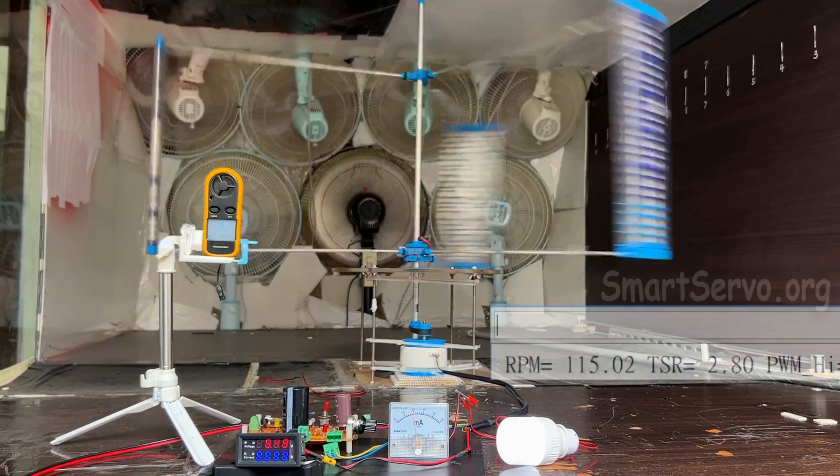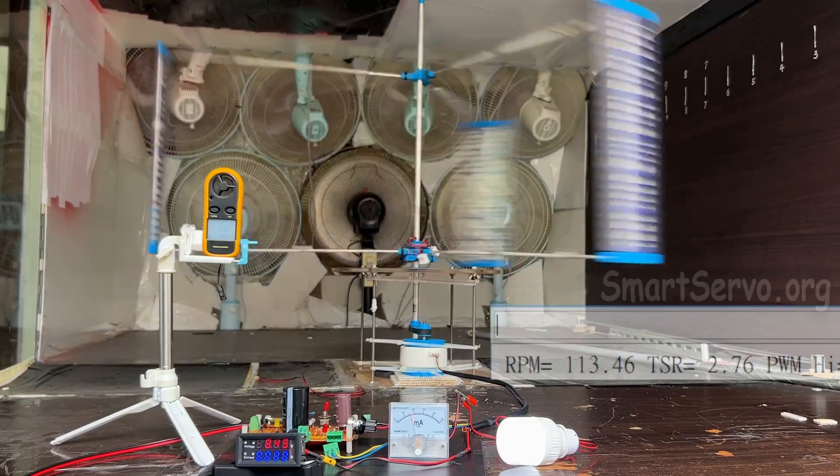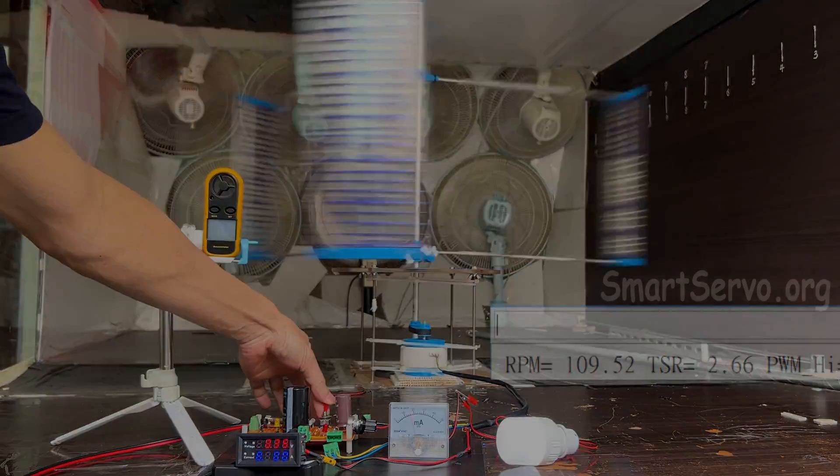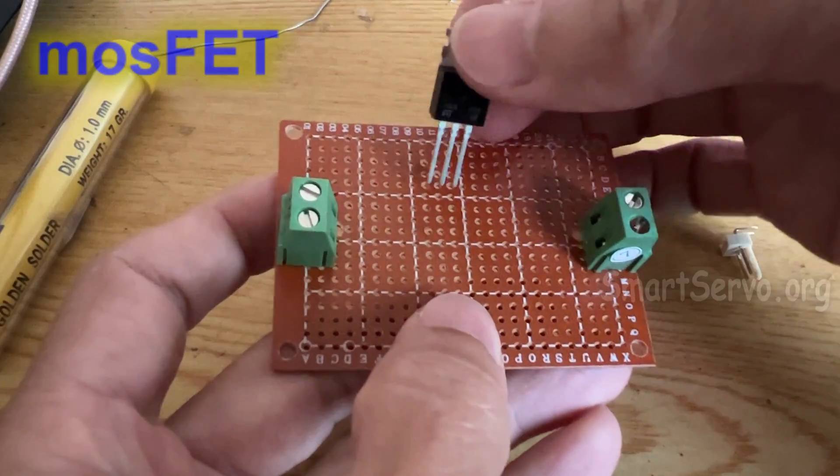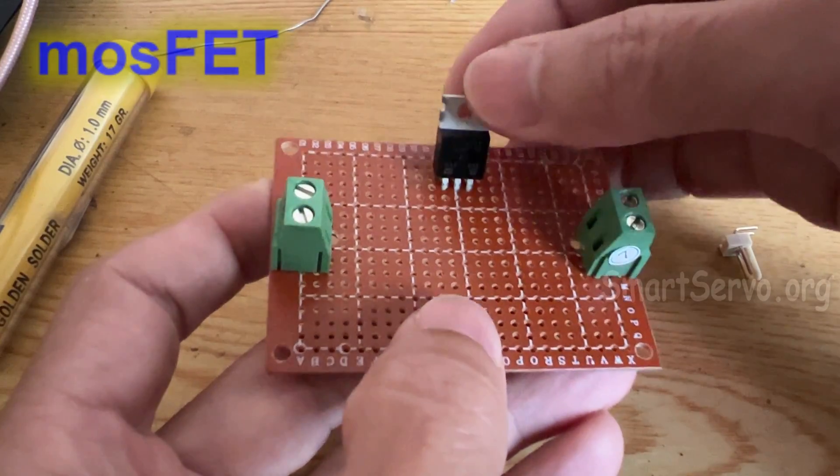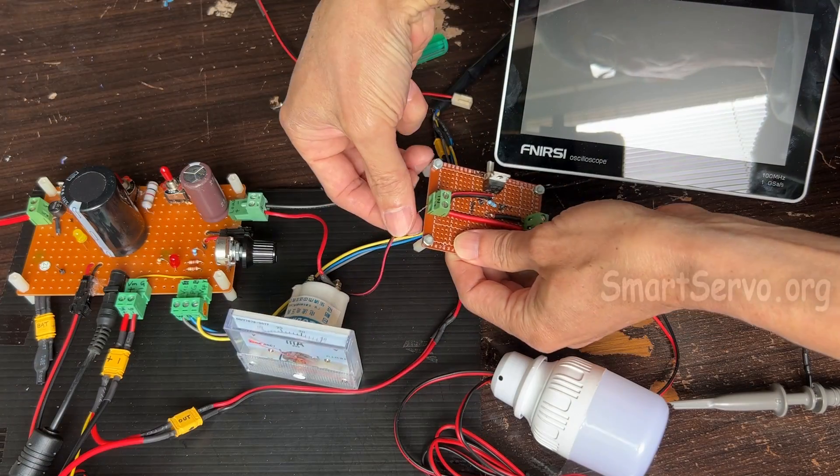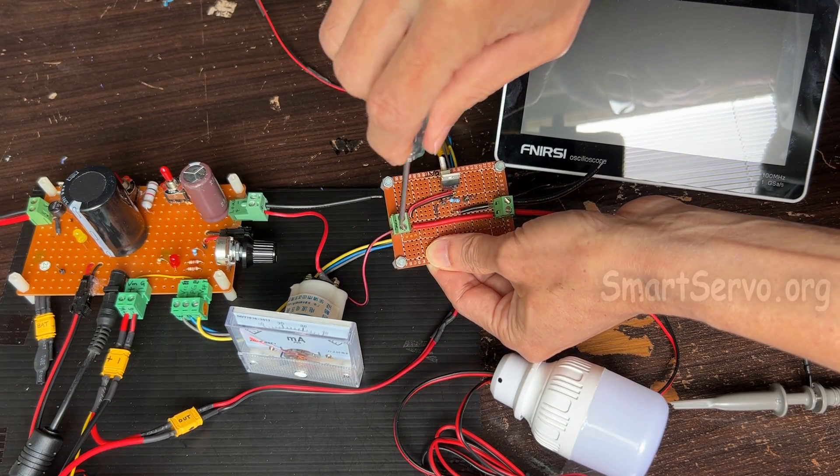At such low wind speeds, is there any way to generate electricity continuously? There is still a way. Buy a MOSFET, made into a PWM module, connected between the generator and the load.